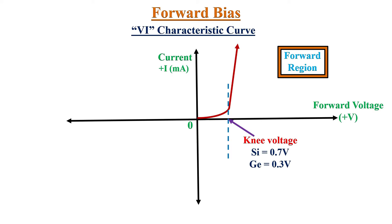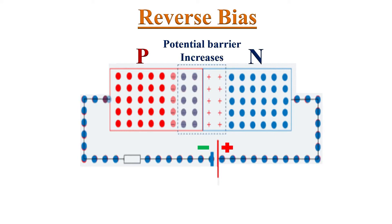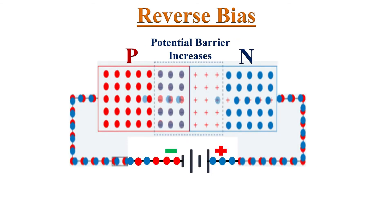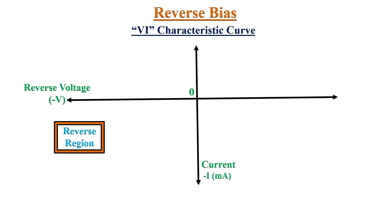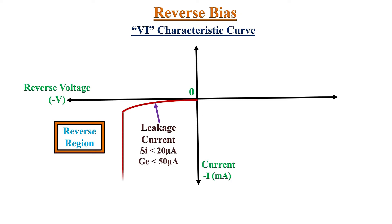On the other hand, during reverse biased condition the potential barrier increases and practically no current flows through the diode. However, a very small amount of leakage current flows through the junction due to the minority charge carriers. Even if we increase the reverse bias, there is hardly any increase in the current.